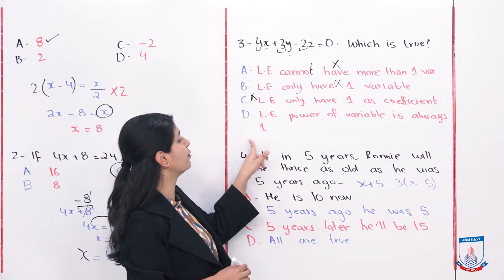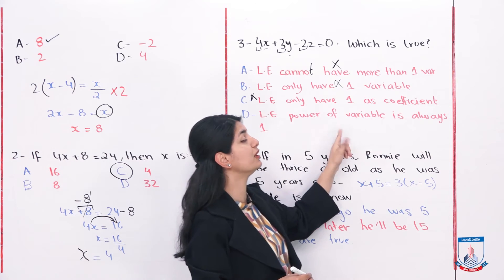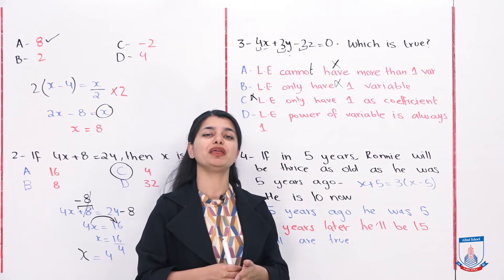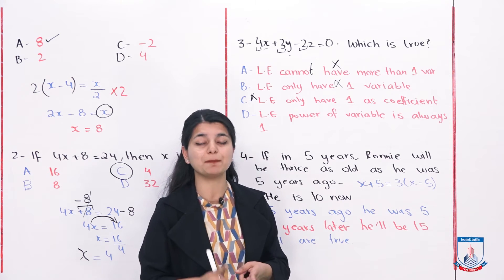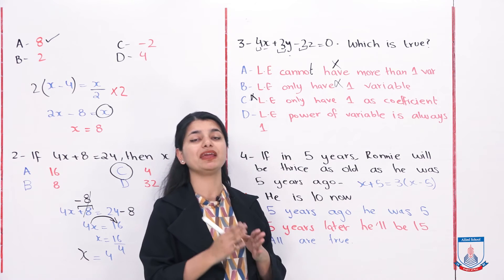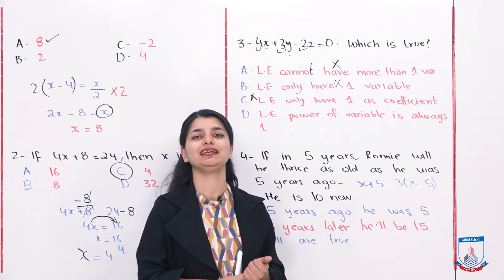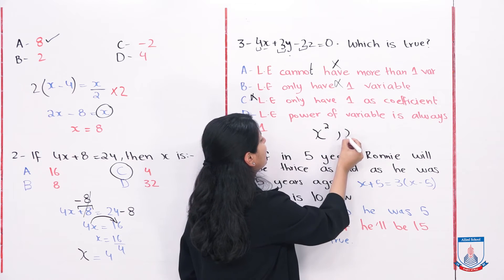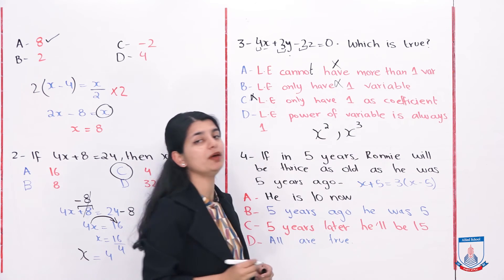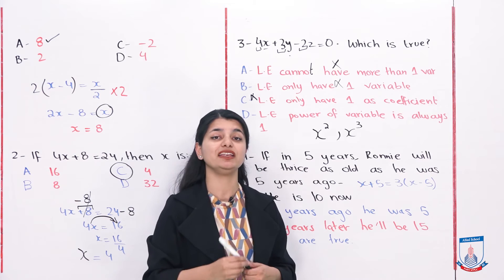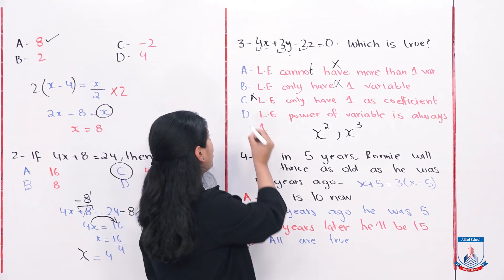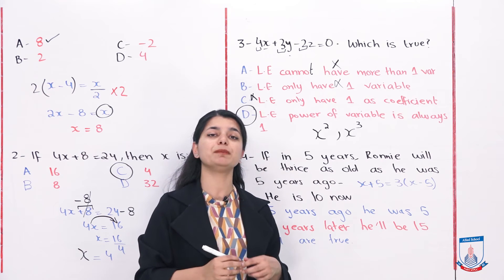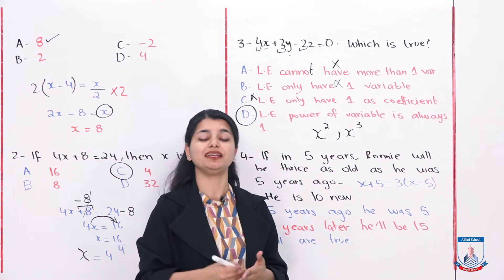Lastly, Option D states that in linear equations the power of the variable is always one. Looking at all the exercises we have done, x, y, and z — their power is always 1, not squared or cubed. So Option D is correct.